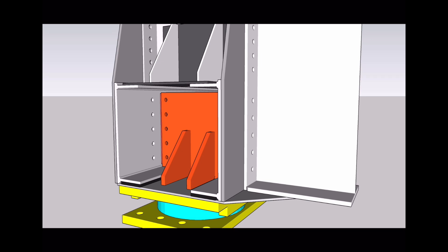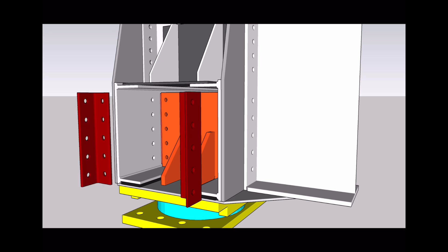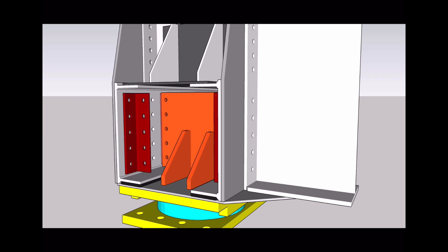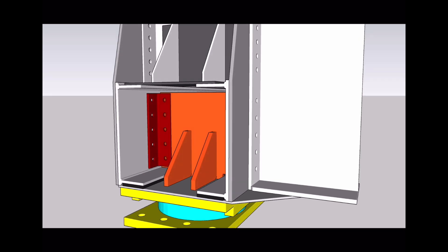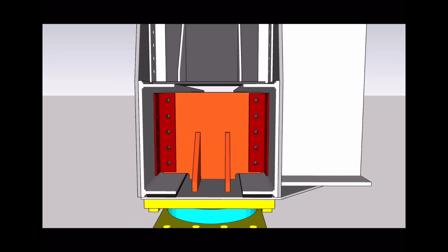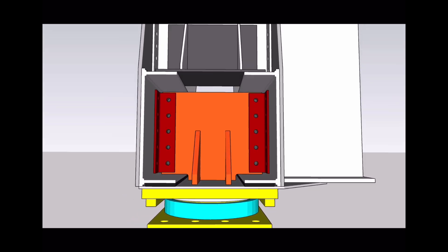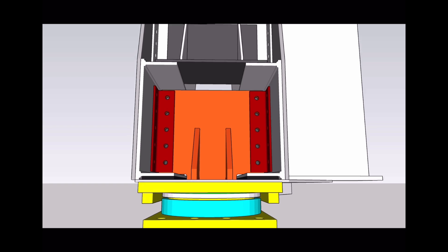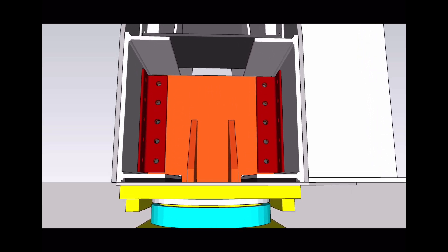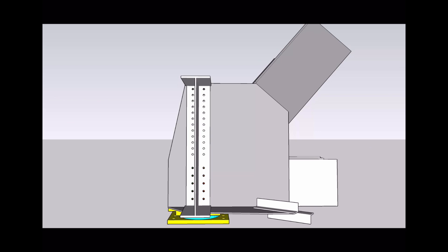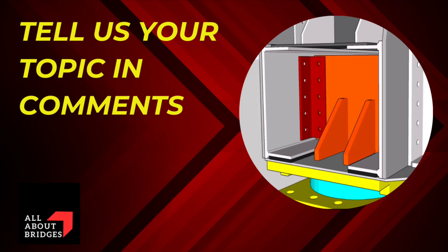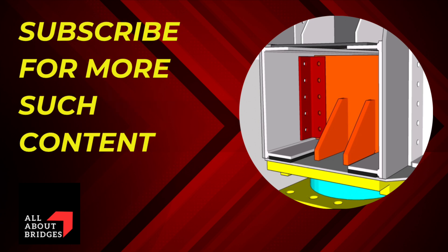The fixing arrangement is the same — that is, with the help of cleat angles and bolts. Our RDSO drawings have been modified in such a way that the same set of cleat angles and bolts can be reused. As shown in this animation video, this system can be used in existing girders. I hope this is quite clear now. If you want a special topic to be covered, please mention it in the comment section. Subscribe for more such content.